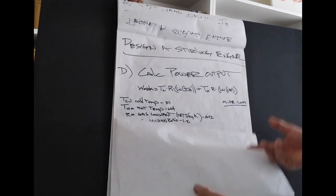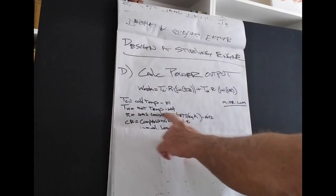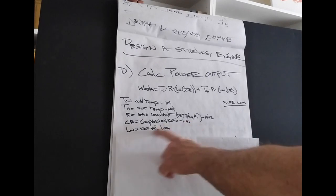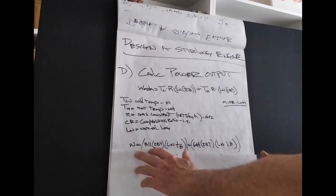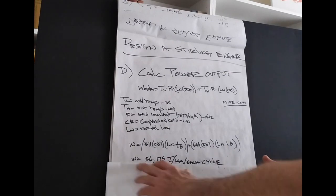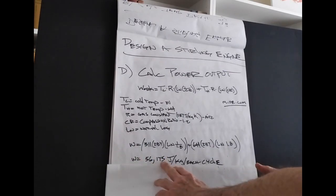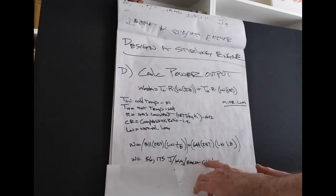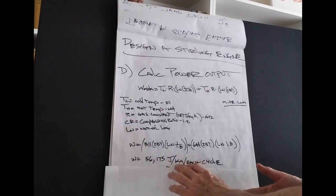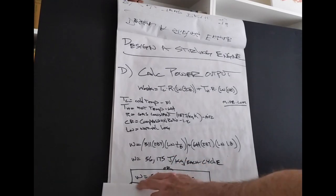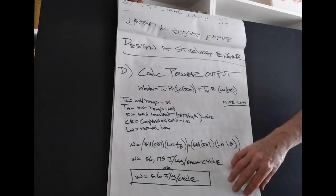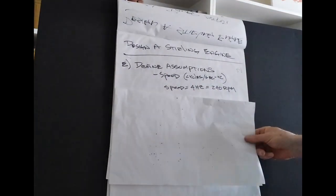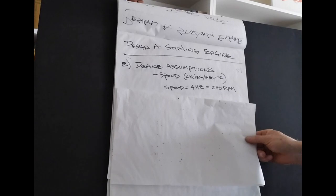So these are our inputs. Temperature cold, 311. Temperature hot, 644. The gas constant. Compression ratio, 1.8. And LN is just the definition of natural log. So the work, we plug those in. We're going to get a work equals this particular equation. It comes out to 56,175 joules per kilogram per cycle. Now let's go ahead and break that down, not per kilogram, but per gram. So that's going to give us our work output is 5.6 joules per gram per each cycle of that engine. So this gives us an understanding of what the net output of that engine is.